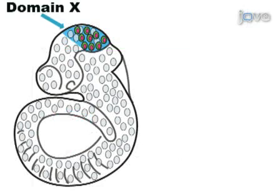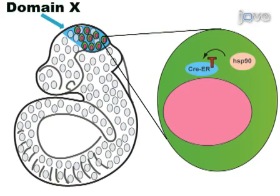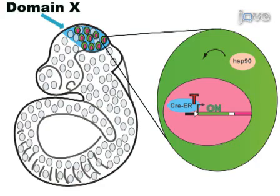Tamoxifen administration results in fate-mapped cells in domain X because Cre-ER is released from Hsp90, translocates to the nucleus, and removes the stop cassette from the reporter allele. Permanent and heritable recombination ensures that cells constitutively express MGFP-LacZ.